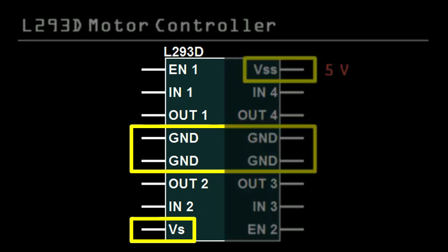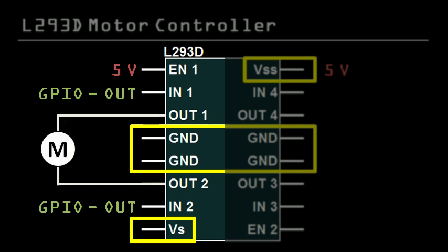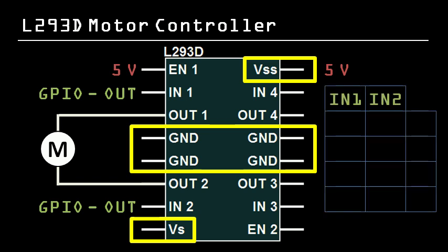To enable the left side, Enable1 must be connected to 5V. The two input pins connect to two GPIO pins set as outputs, and the two output pins on the chip connect directly with the motor. The two input pins give us a way to control the direction of the motor. When both are set the same, the motor doesn't move.